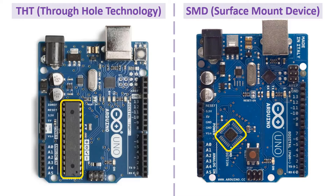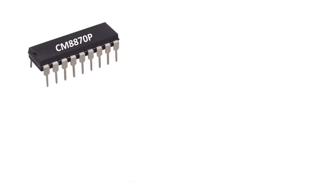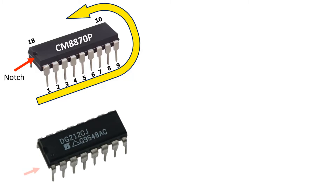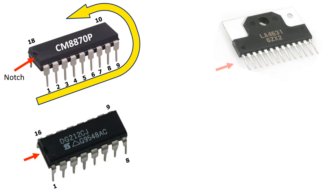Now let's look at how the pins of the integrated circuits are numbered. When we hold it to read the text on the IC, there is a notch on the left side. Pin names are numbered starting from this notch. This is the integrated 18-pin IC we reviewed. This IC is a 16-pin IC. In this integration, when we hold it to read the text, there is a dot on the left. The pins are numbered from left to right. As you can see, this is also a 13-pin IC.